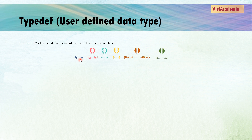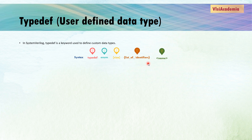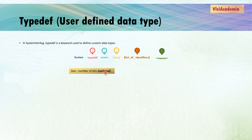Now we will see the syntax for typedef to create an alias for an enumerated data type. First, write 'typedef', then 'enum', followed by the size and list of identifiers — the same as we saw before — but here the final name is not a variable name; it indicates a data type name. The size is optional (just the number of bits), and the list of identifiers is the list of named constants.